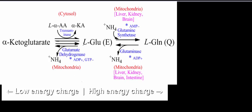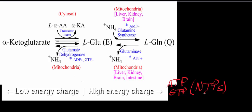To understand what energy charge is, we need to understand which molecules are associated with low energy charge and which with high energy charge. Molecules associated with high energy charge are things like ATP, GTP — in general, our nucleoside triphosphates. The 'tri' is important because adenosine diphosphate and adenosine monophosphate do not fall into this category. Other things associated with high energy charge include NADH and sometimes acetyl-CoA.